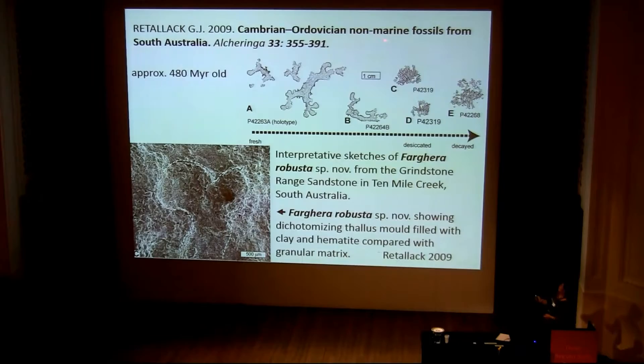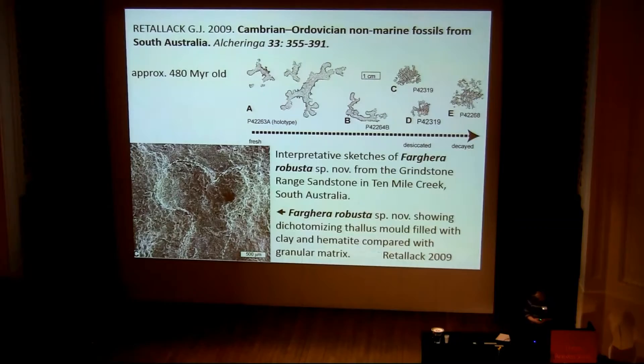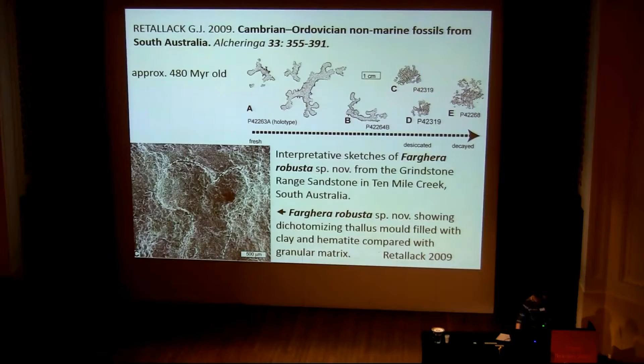Cambrian or Ordovician non-marine fossils, as Greg Retallack calls them — though other investigators refer to them as marine fossils — include outlines of organisms which look like thalli. They could equally well have been some kind of red algae or something alike. These impressions are published as Fargera robusta by Greg Retallack. The outlines look promising, but what Fargera actually is, is not known, at least not to me.